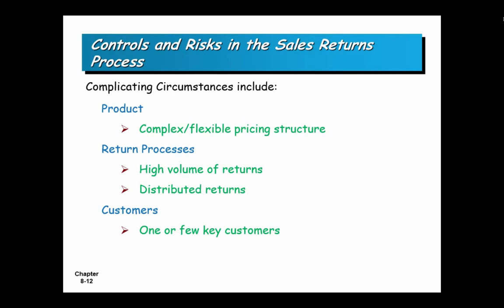For products, if you have a flexible pricing process based on quantities purchased — they bought 100 and are returning 50 — they got a discount for buying 100, but the refund should be based on what the per-item cost would be if they'd only bought 50. Volume discounts complicate returns. If you have more returns than you should, maybe you have a problem with your product, and you should account for this separately to manage it better.